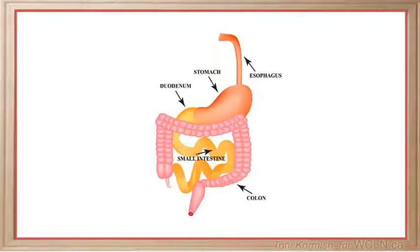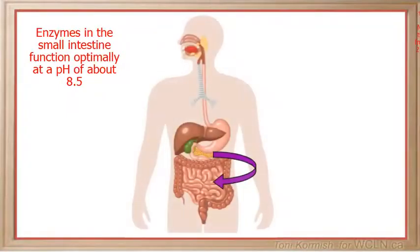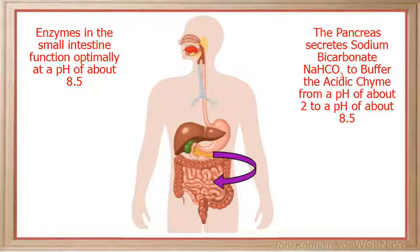Enzymes in the small intestine function optimally at a pH of about 8.5, so the acidic chyme entering the small intestine must be buffered. The pancreas secretes a buffer called sodium bicarbonate into the small intestine to buffer the acidic chyme from a pH of about 2 to a pH of around 8.5.